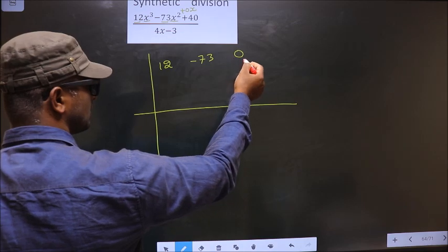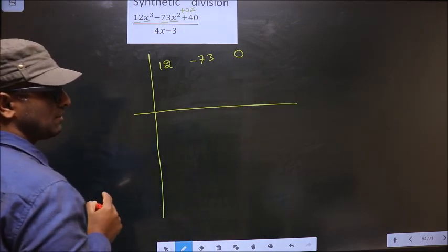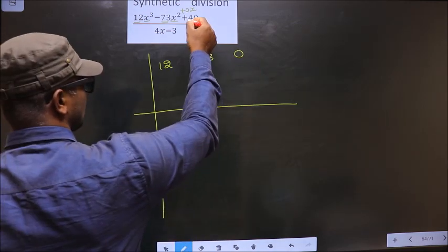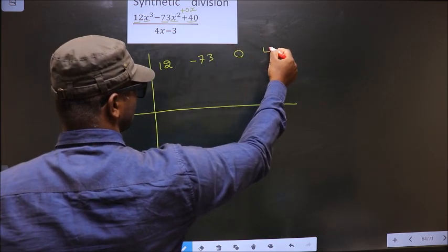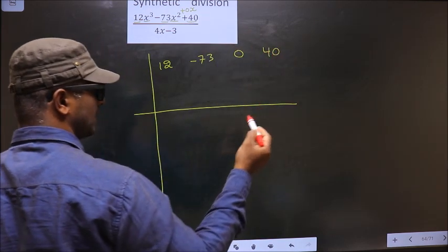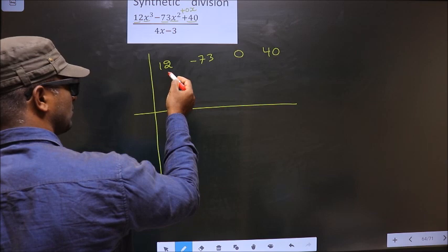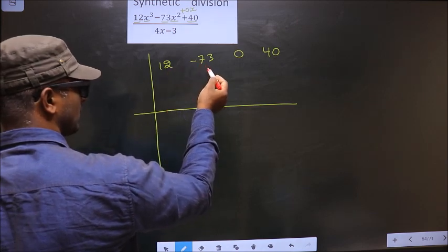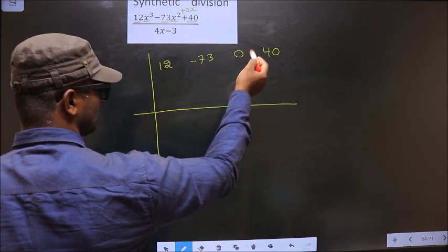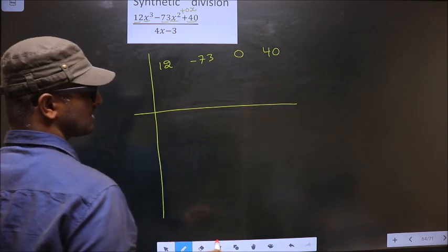Many do not write this 0, you should not do that mistake. Finally, the constant 40. I repeat, first x cube coefficient, next x square coefficient, next x coefficient and finally the constant.